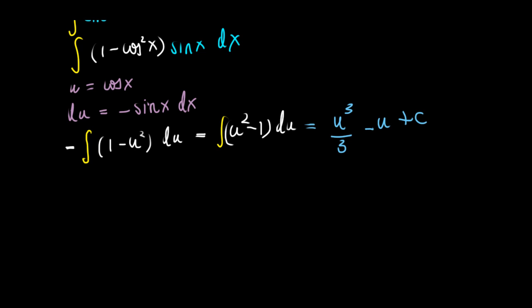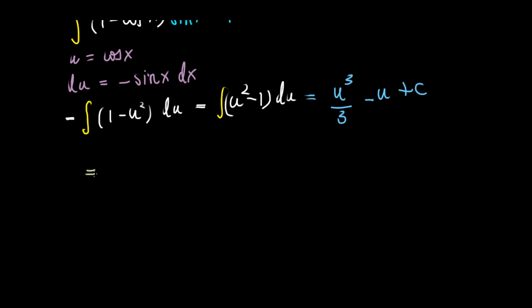This is u cubed divided by 3 minus u plus some constant. We're not done yet because we have to express our answer in terms of x. People wouldn't know what u is. So u is cosine of x. Let's substitute that. This becomes cosine cubed x divided by 3 minus cosine x plus some constant.